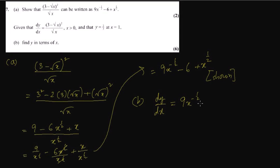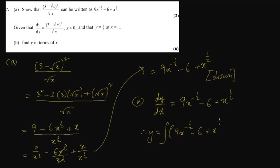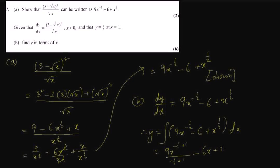It's always easier if we follow their advice and how they are telling us to do it. So instead of the original expression, we are writing what we just showed. Therefore, y is going to be the integration — the fundamental rule of integration says that integration is the opposite of differentiation. So it's going to be 9 times x to the power minus half plus 1, divided by minus half plus 1, minus 6, plus x to the power half plus 1, divided by half plus 1.